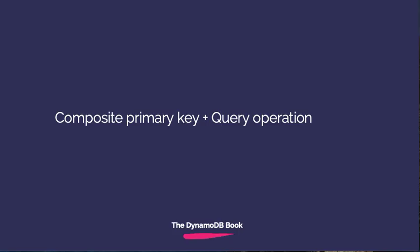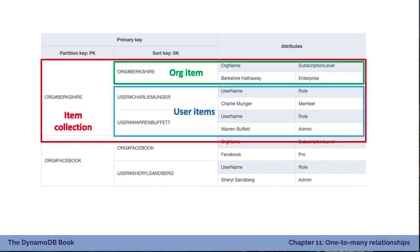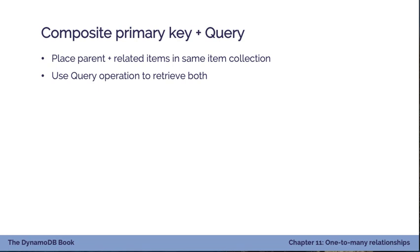The third strategy is the most common one: using a composite primary key plus the query operation. Going back to our SaaS application, different organizations have users belonging to them. We create an item collection that contains both the organization and user items. The Berkshire item collection contains the organization item itself and all its user items, representing that one-to-many relationship. You place the parent and related items into the same item collection, then use the query operation to retrieve both types in a single request by specifying the partition key.